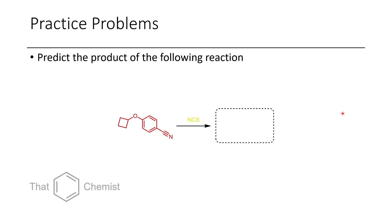Before we get into that, let's go through the practice problems I assigned last lecture. You may recall that last lecture we talked about electrophilic aromatic substitution reactions — EAS reactions. In this case we have a nitrile, which is an electron-withdrawing group, meaning that it's a meta-director.